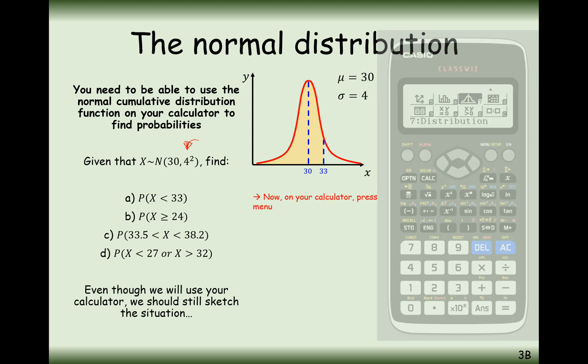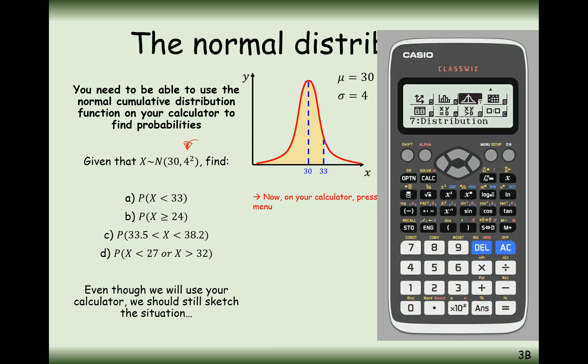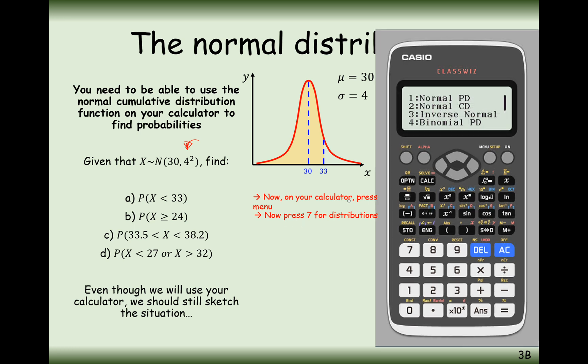What we do then is go to our calculator. First press menu, then go down to option number 7 for distributions. What we're looking for here is to use option number 2, the normal CD, the normal cumulative distribution function.